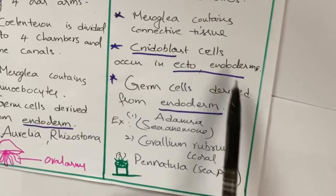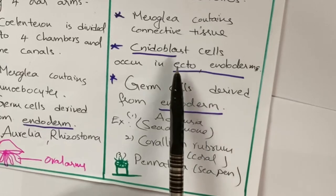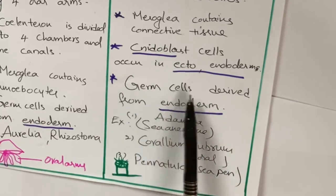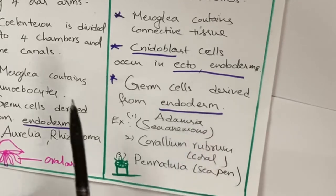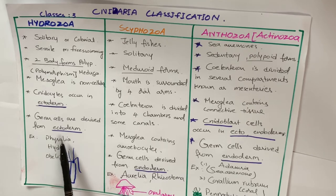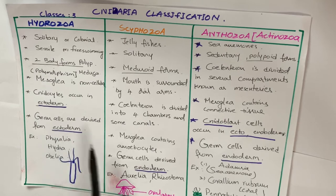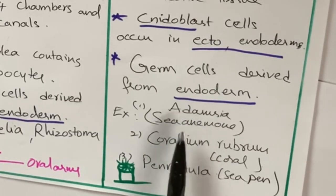You have to remember all these for your exam. Nidoblast cells occur in both ectoderm and endoderm. Germ cells are derived from the endoderm in Scyphozoa and Anthozoa, whereas in Hydrozoa, germ cells are derived from the ectoderm. Remember this difference.